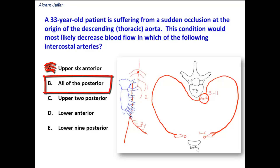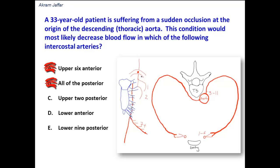Option B is all of the posterior intercostal arteries. As you can see here, at least the upper two posterior intercostal arteries, in the intercostal spaces first and second, are branches of the superior intercostal artery, which is a branch of the costocervical trunk, which is a branch of the subclavian artery. So they are not derived from the descending thoracic aorta, and therefore the option 'all of the posterior intercostal arteries' is invalid.